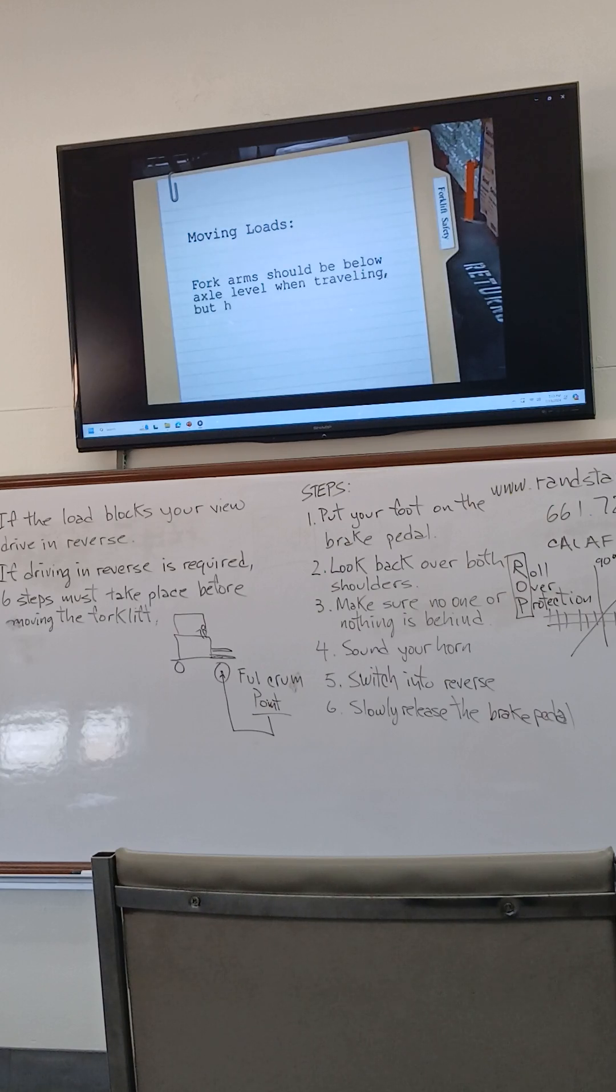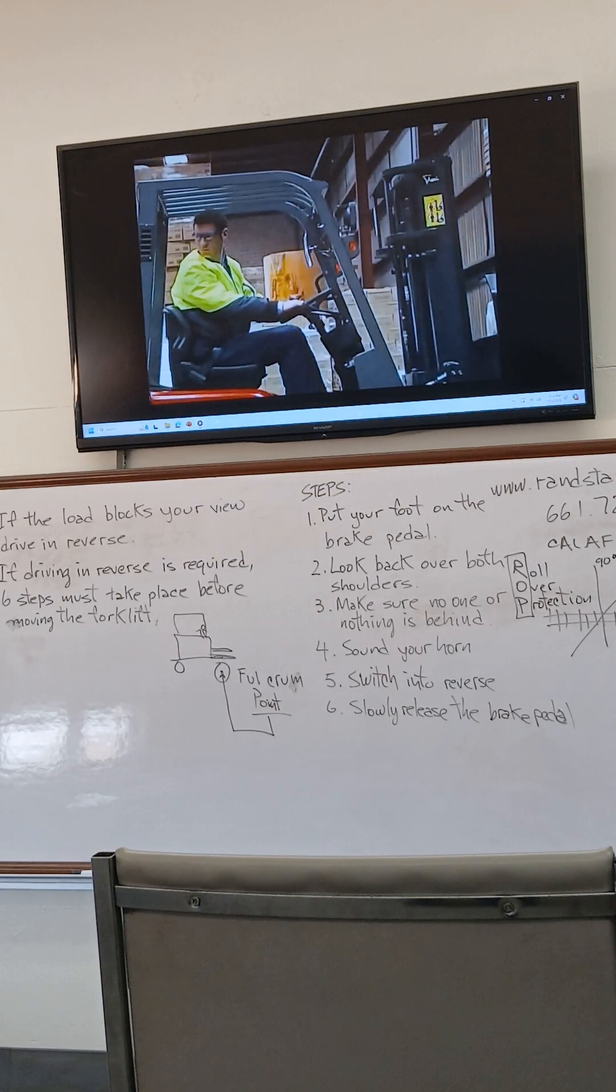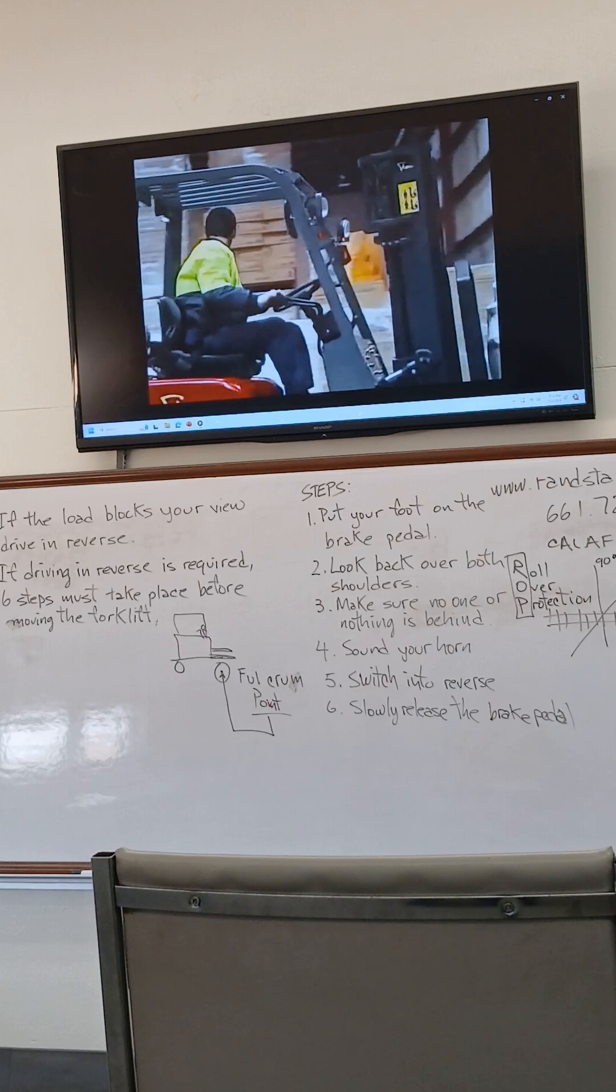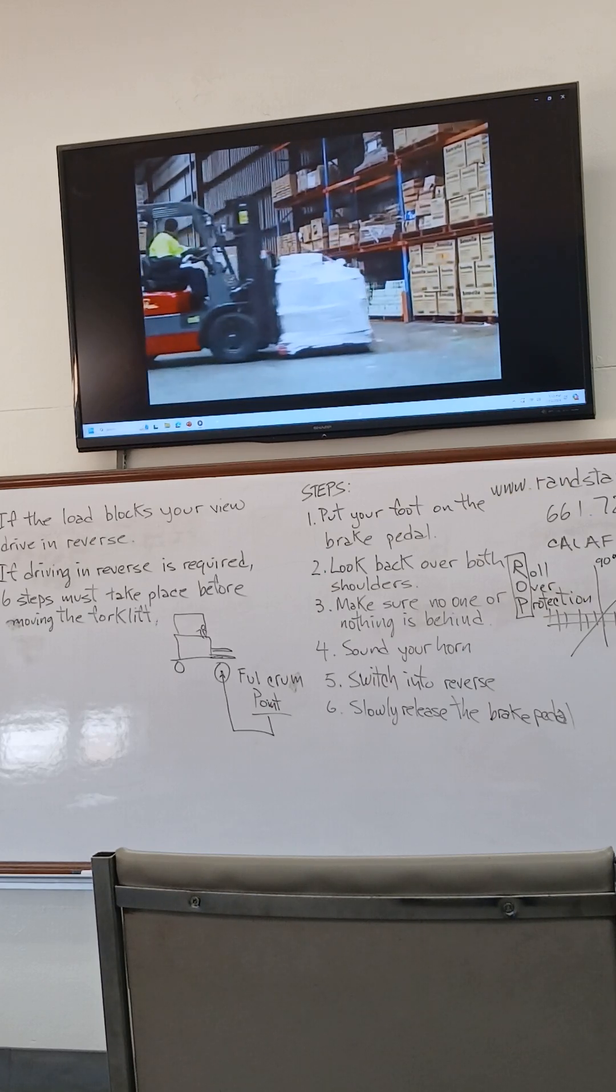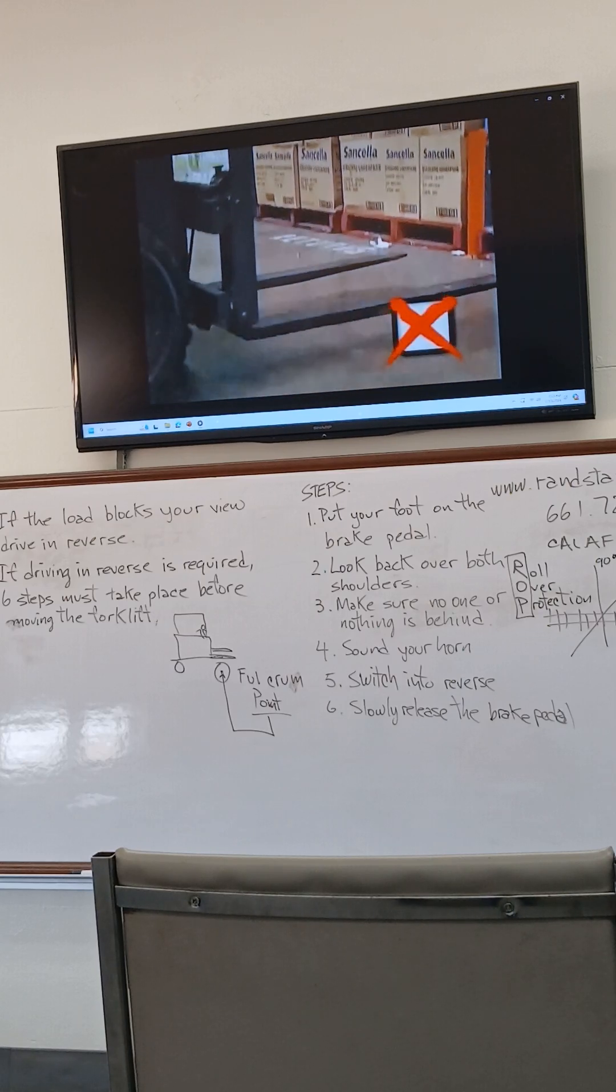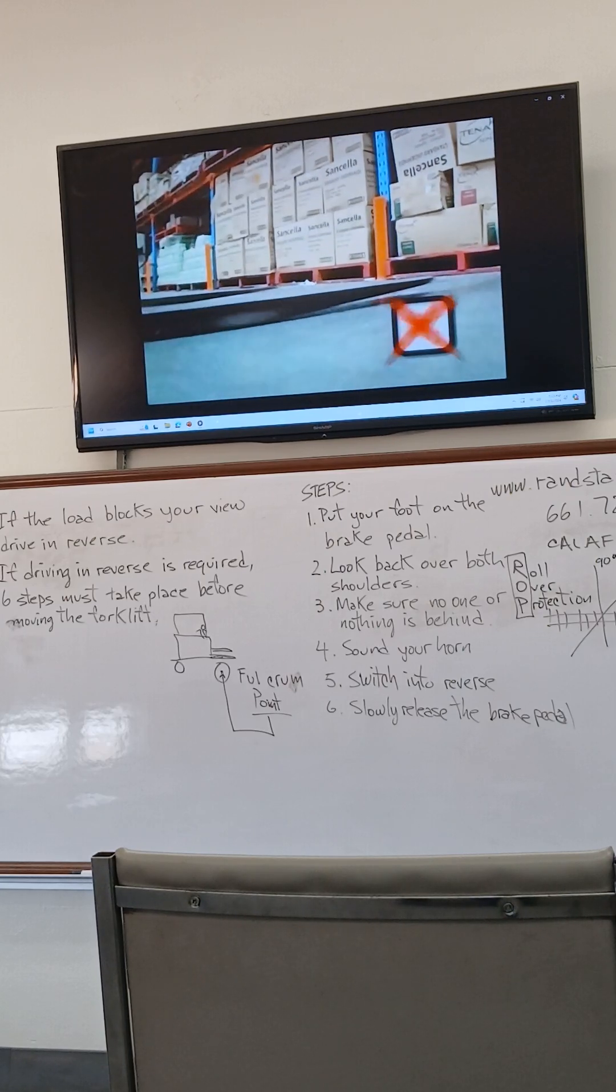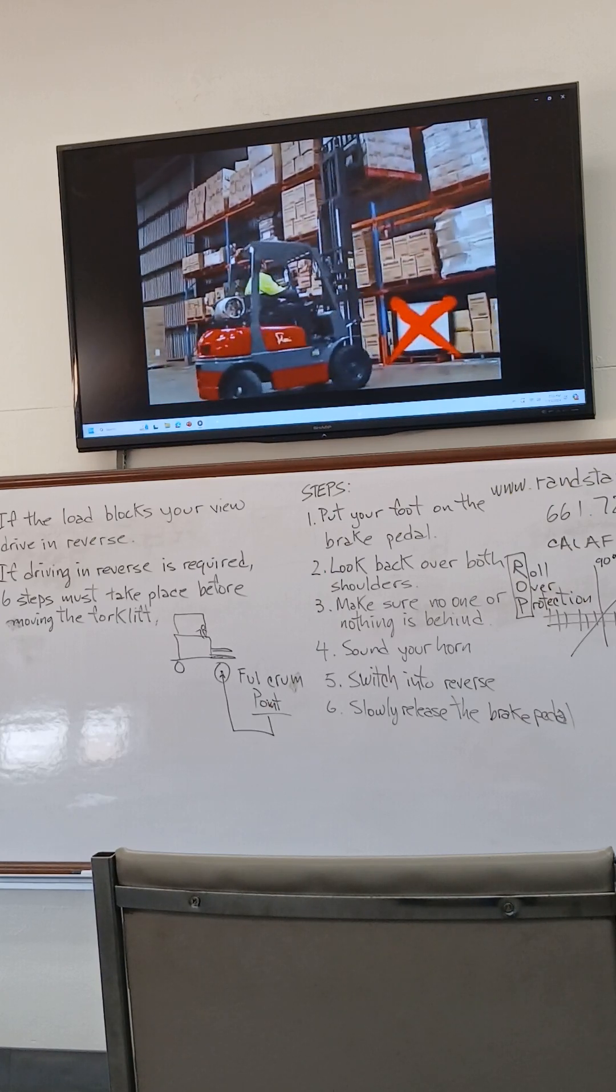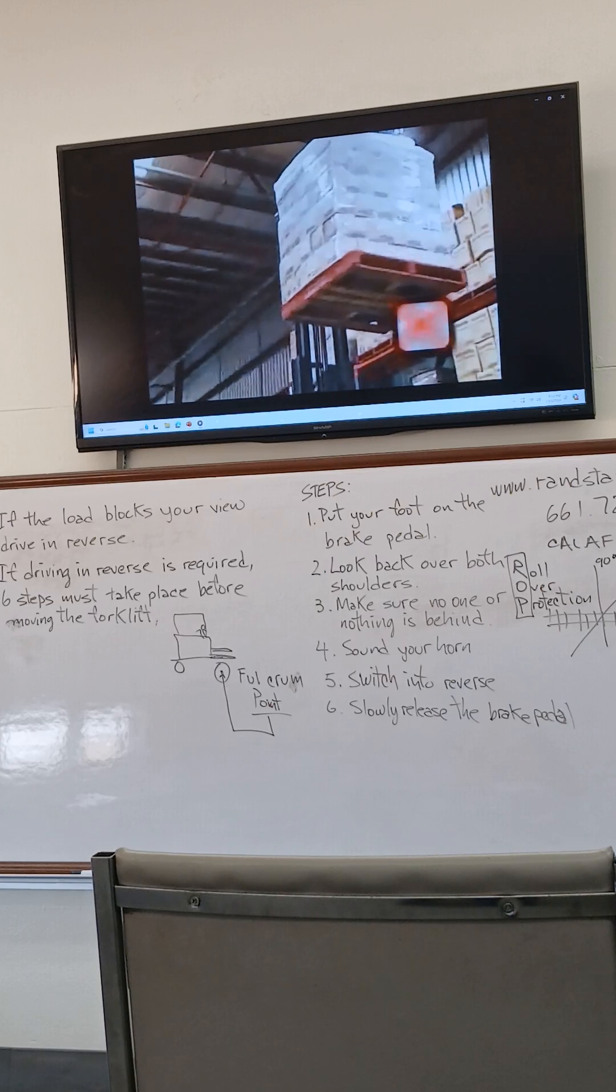Fork arms should be below axle level when traveling but high enough to clear any unevenness in the floor. Before backing up, check behind on both sides for pedestrians or other traffic. Avoid banging the fork arms onto the floor or dragging the forks on the ground. Never turn or travel until the load is lowered to the ground level.